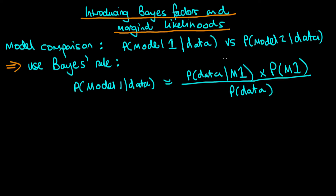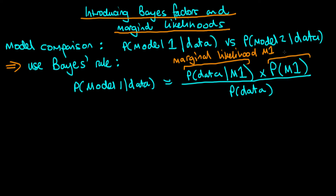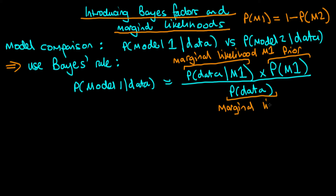What are each of these terms? This first term in the numerator is what we define as the marginal likelihood of model one, and I'll explain how to calculate that in a second. The second term is our prior probability that we ascribe to model one — in the circumstance where we have two models, the probability of model one is just equal to one minus the prior probability of model two. Finally, the term on the denominator is also a marginal likelihood, except now it's the marginal likelihood over both models.